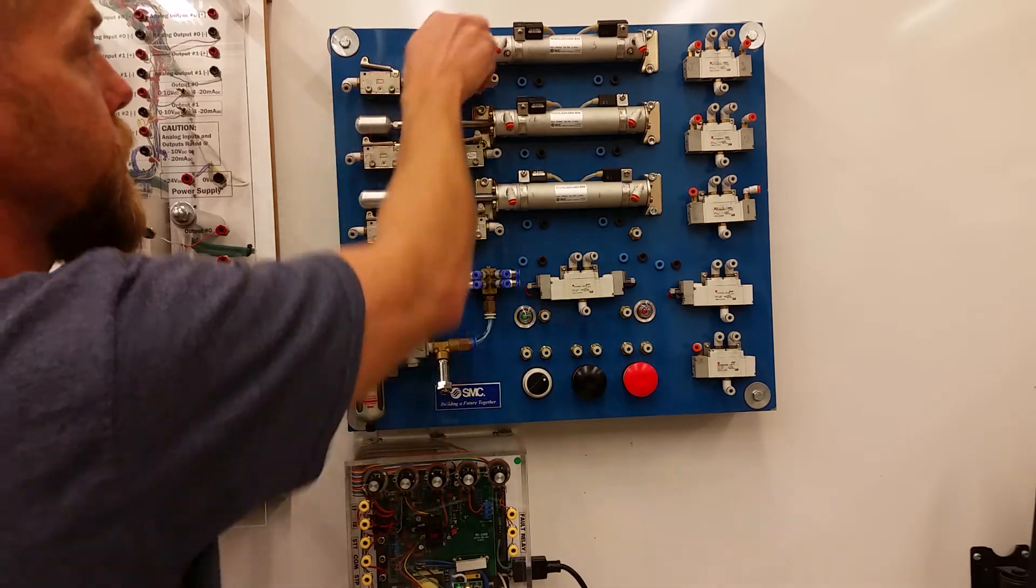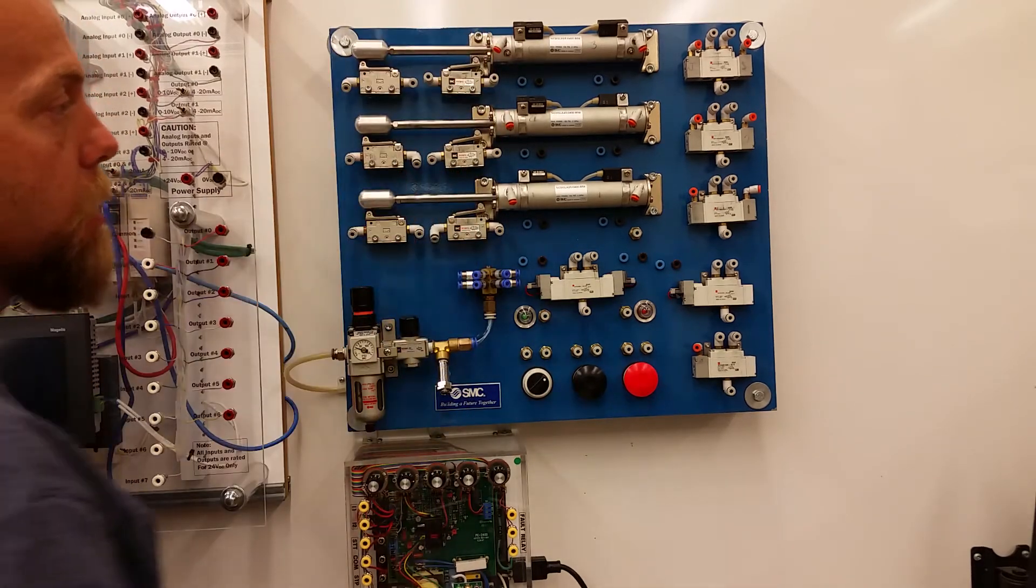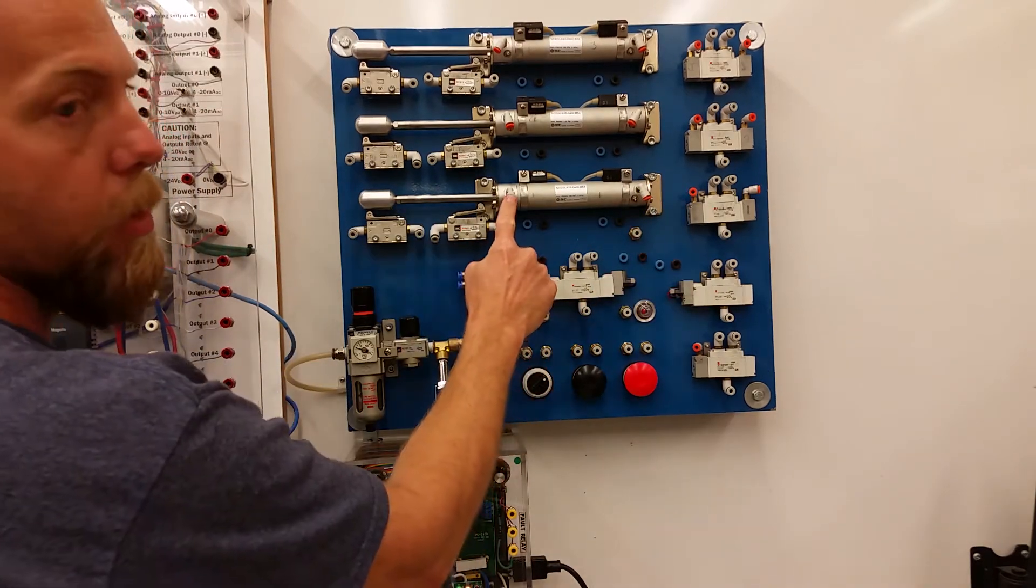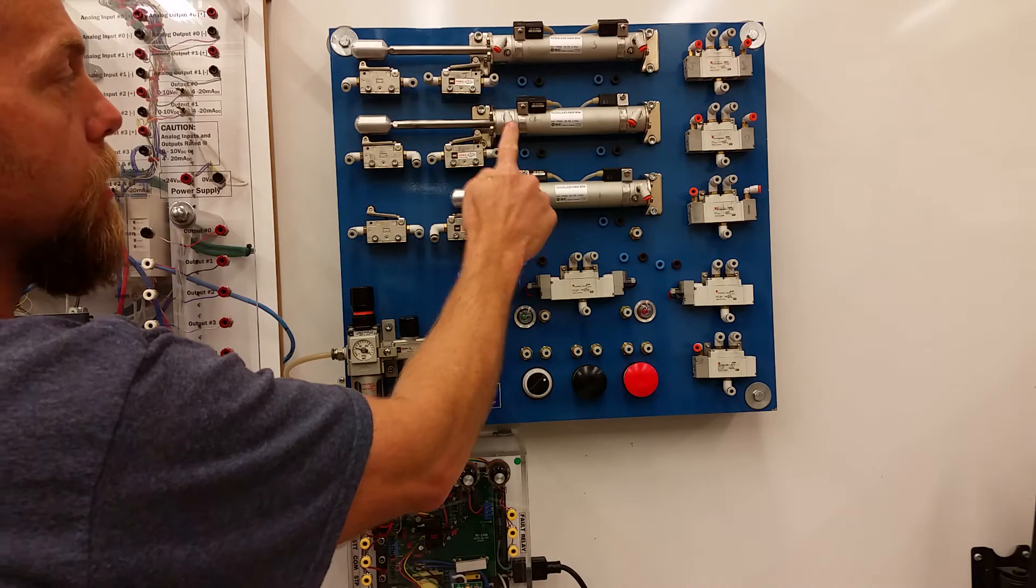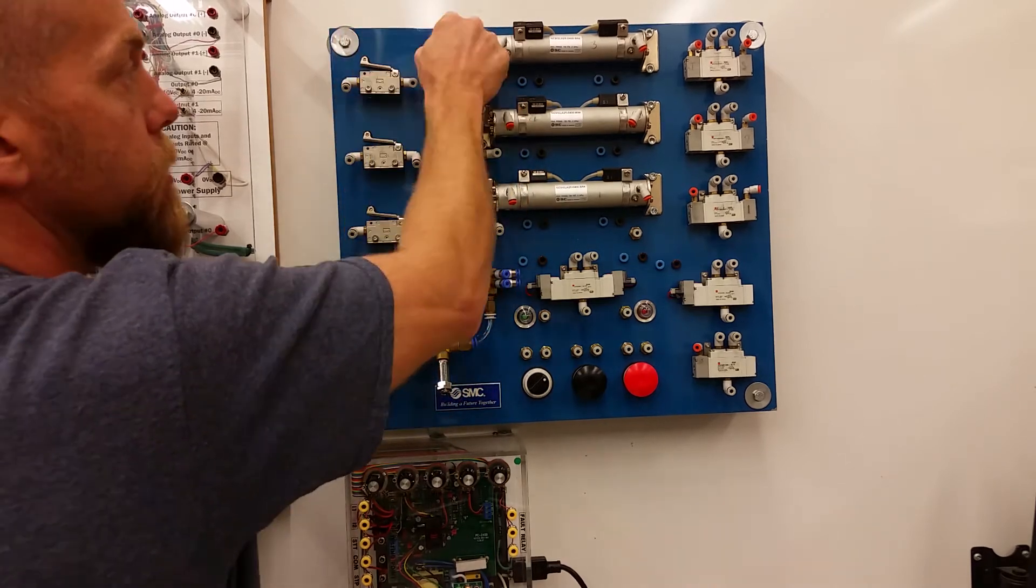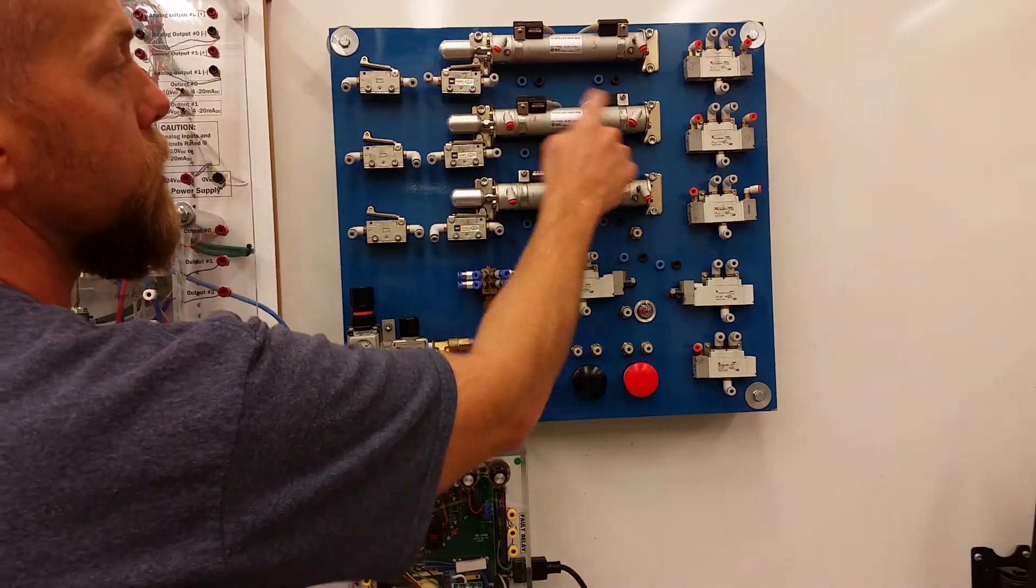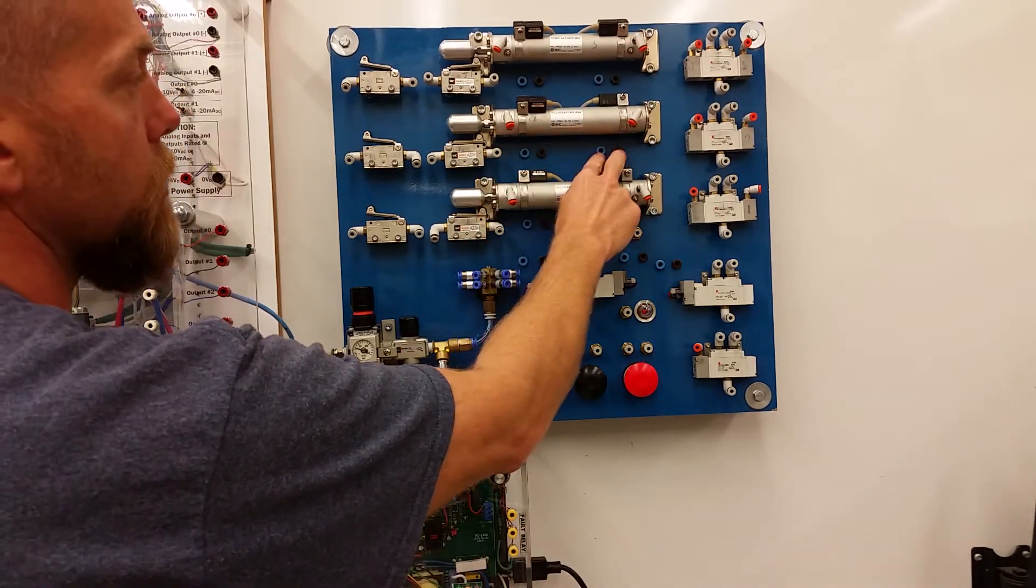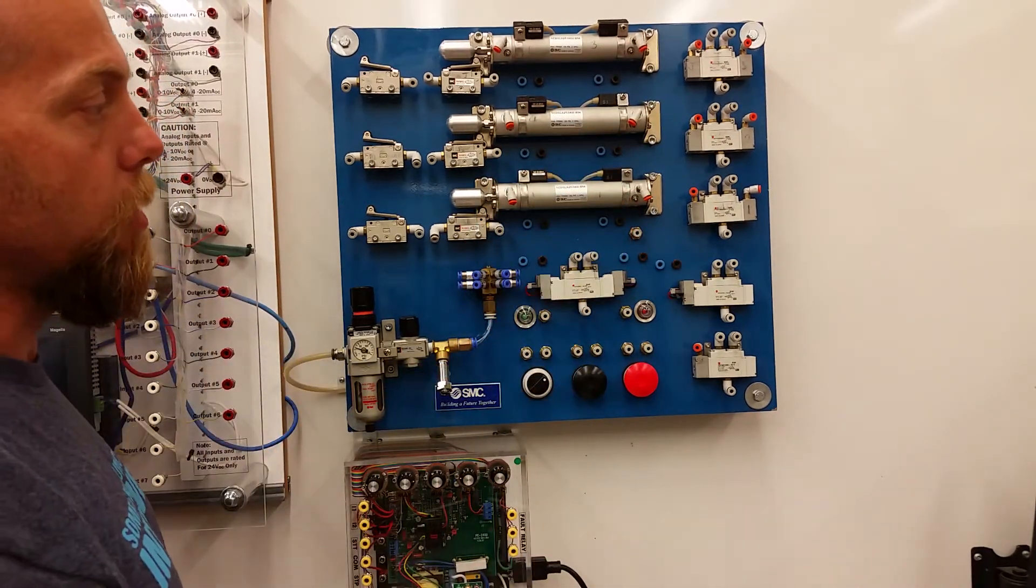What else have we got here? We've got three actuators here. They're double-acting actuators in that if we put air to here, they're going to extend. If we put air to the second port, then it's going to retract. Okay, there are limit switches here. I believe these guys are just reed switches. And then we can connect those into our PLC later on.